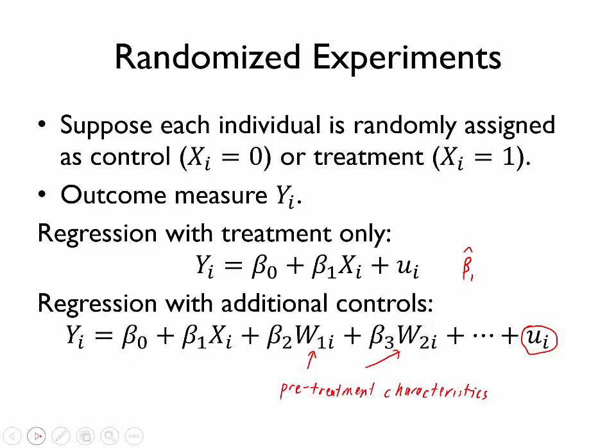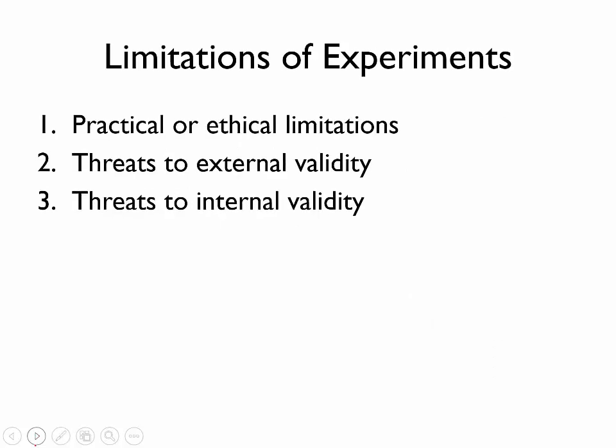So experiments are often called the gold standard because randomization makes the estimated treatment effect unbiased. In other words, we don't need the control variables, even if they do help to improve precision. So we might wonder, should we always rely on experiments in order to answer important questions about causal effects? The short answer is no. And that's because running carefully controlled experiments is not always possible in relevant settings. And broadly speaking, we might categorize the limitations of experiments into three broad categories.